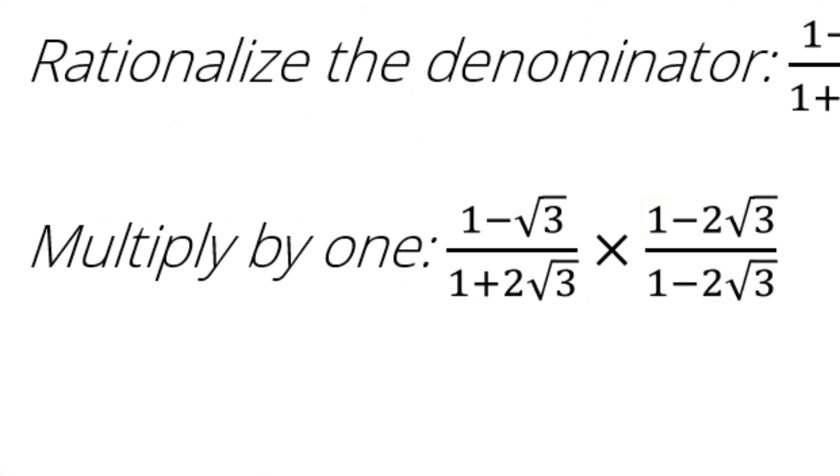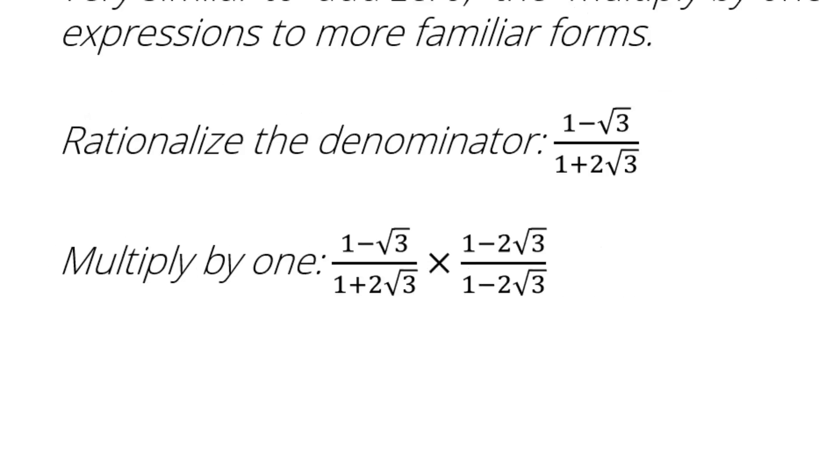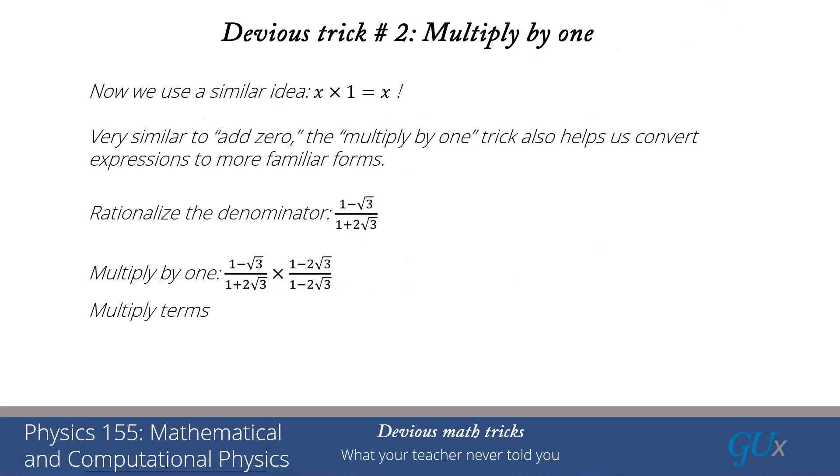We now just go through the multiplication. If I take the numerator, I'll have 1 times 1, 1 times minus 2√3, minus √3 times 1, and minus √3 times minus 2√3. In the denominator, I'll have the difference of the squares, 1 minus the square of 2√3. We can put those together. We're going to get (1 minus 3√3 plus 6) divided by (1 minus 6). We then can simplify that to minus 7 fifths plus 3 fifths root 3.